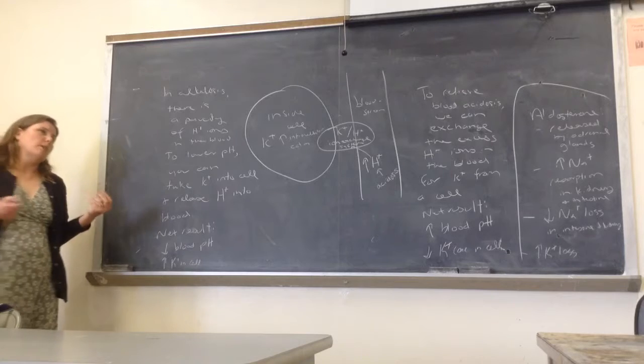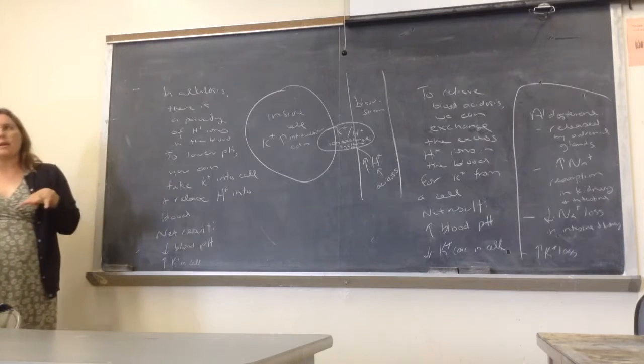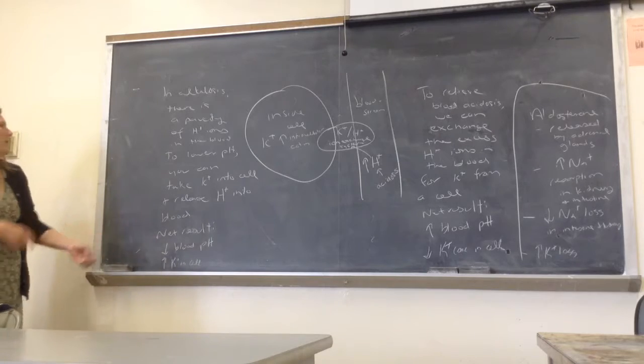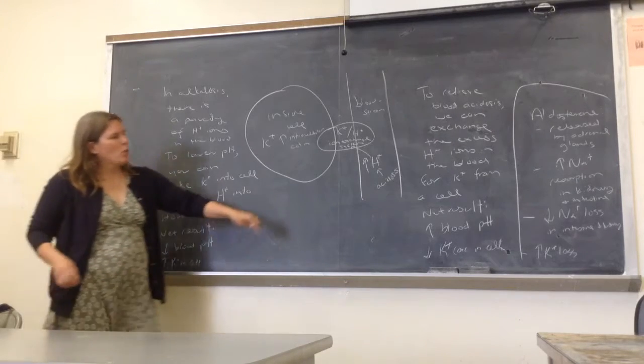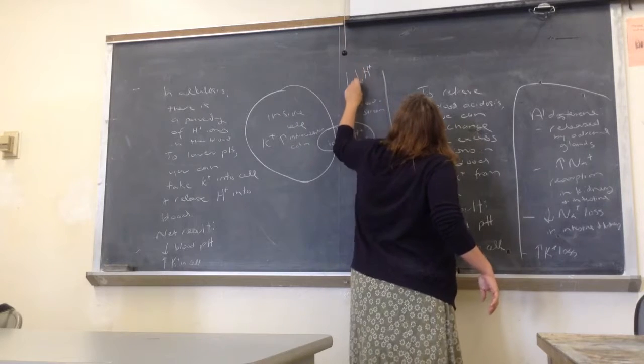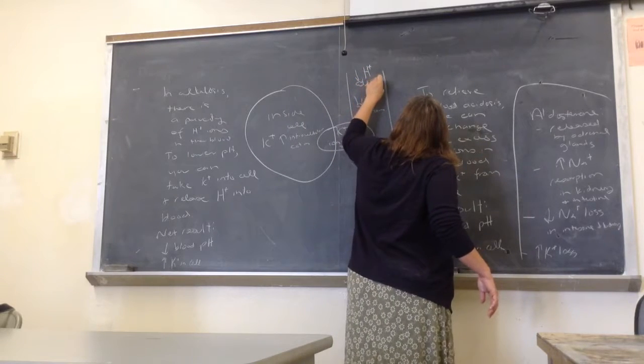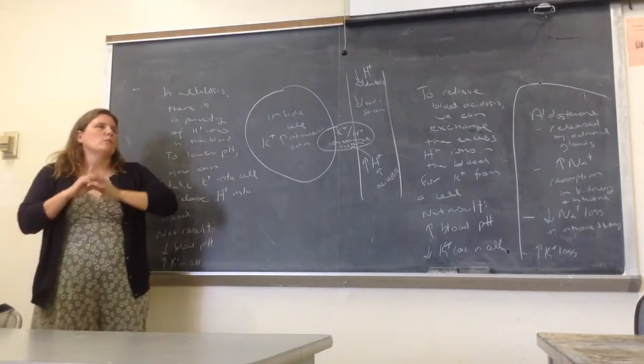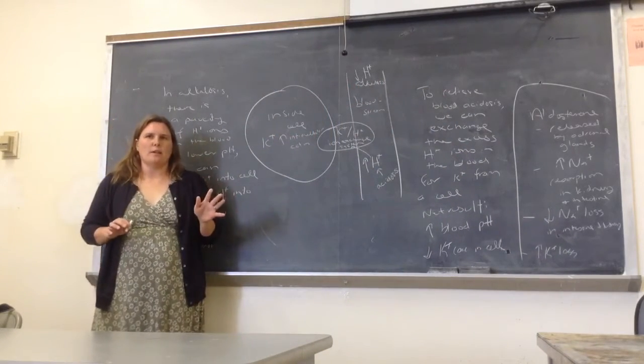We usually take potassium in and send sodium out, but we can down-regulate that so that we're not taking as much in, and we have a way to regulate that. This is the driving factor, because without maintaining the pH in the right range in the blood, we start to fall apart really fast.